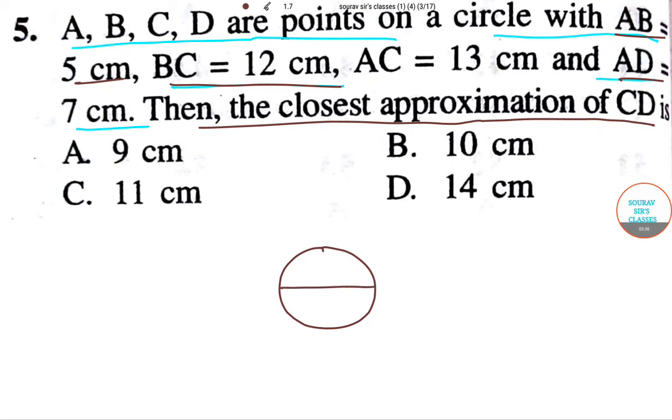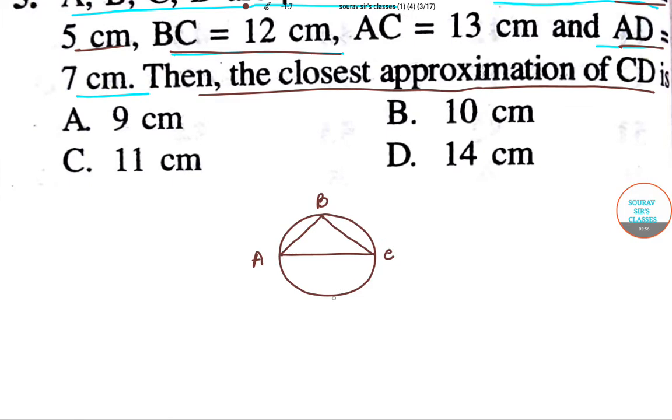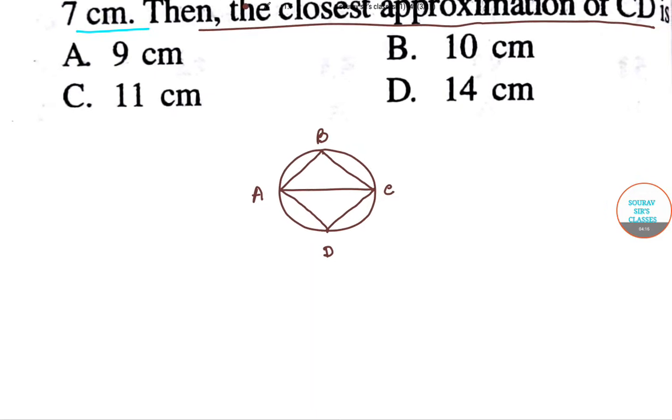Suppose this is the circle. Now we have AB that is 5 centimeter, BC 12 centimeter, AC 13, and AD 7. Then the closest approximation of CD is which of the following? So what we can do first, we can draw a line that is AC. Now another point that is B, and we can join them.